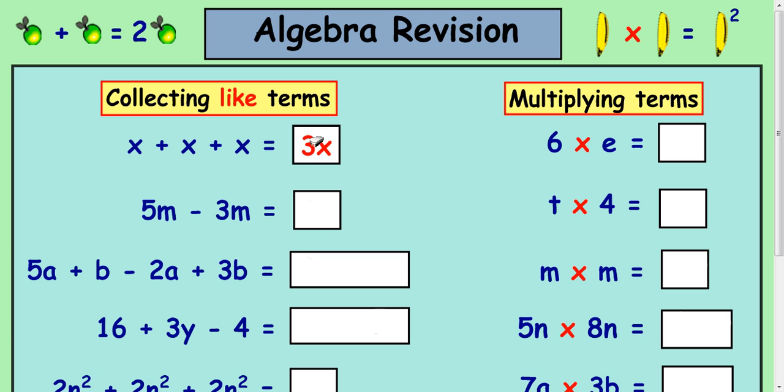Now this means the same as 3 multiplied by x. If I said in this case x was 2, then 2 plus 2 plus 2 would be 6. And in this case here, it would be 3 times 2, which makes 6. So this is a simplified version of the x plus x plus x.